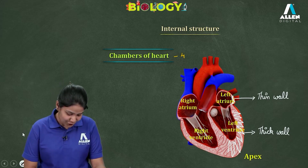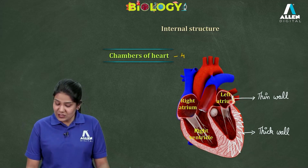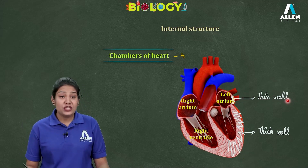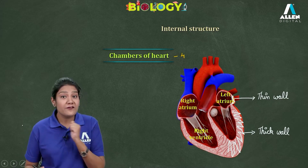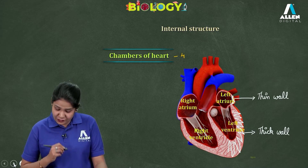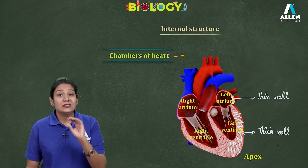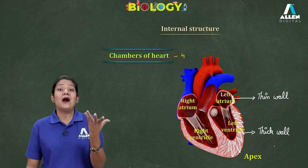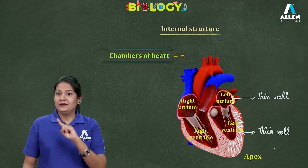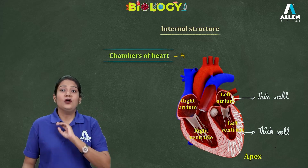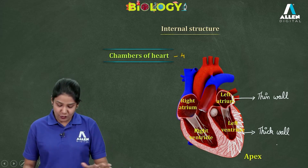The atria have thin walls because their function is only to receive blood. The ventricles, particularly the left ventricle, have thick walls because their function is to pump out the blood. Also note that our heart does not purify or filter the blood — its function is only to pump the blood.